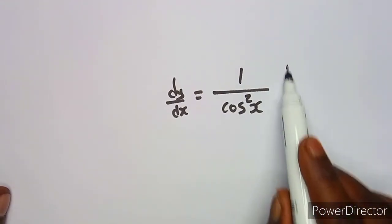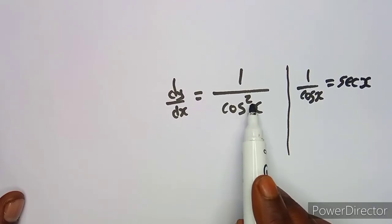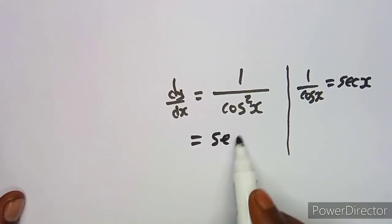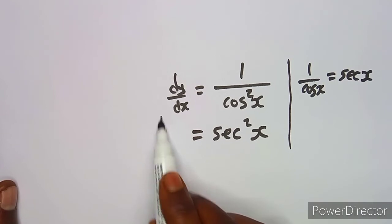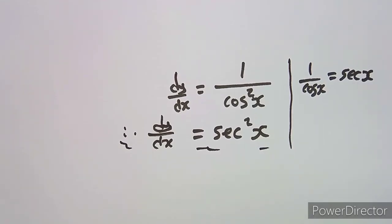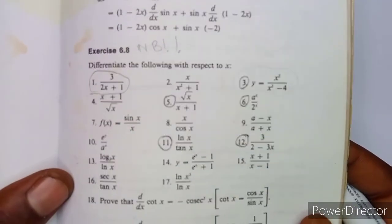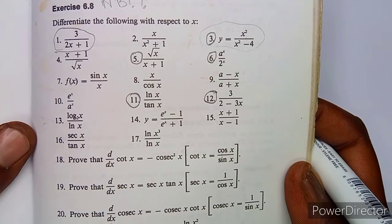So dy/dx is going to be 1 over cos²x. We know that 1/cos x gives us sec x, but since it's cos squared, it's going to be sec²x. So that's your dy/dx — sec²x. As you can see, we are now in the simplest form and there's nothing more to simplify. That's a typical question when working with the quotient rule when we are dividing.